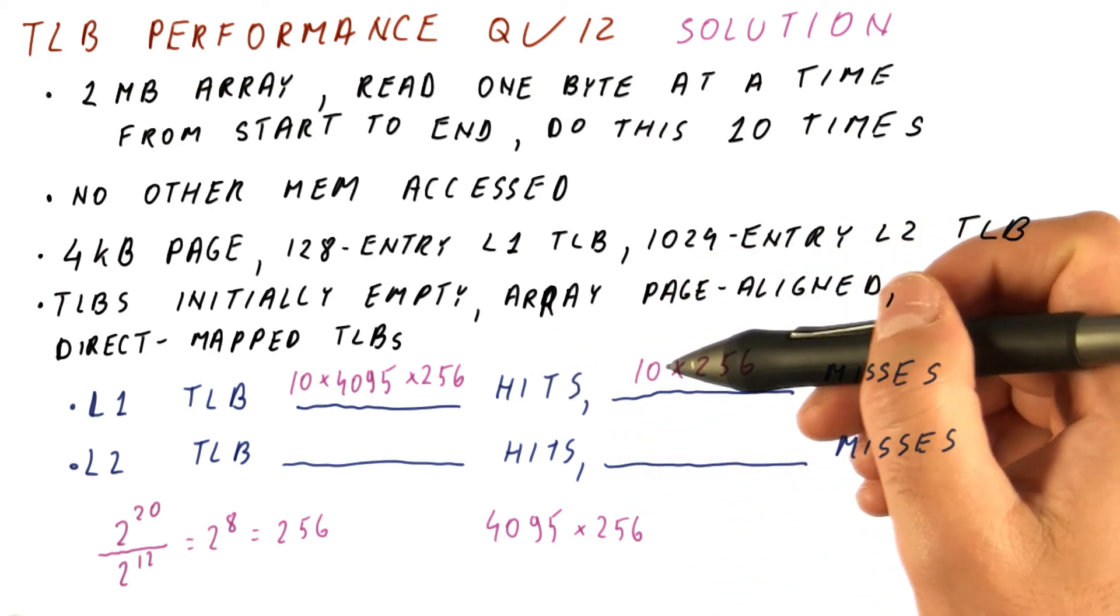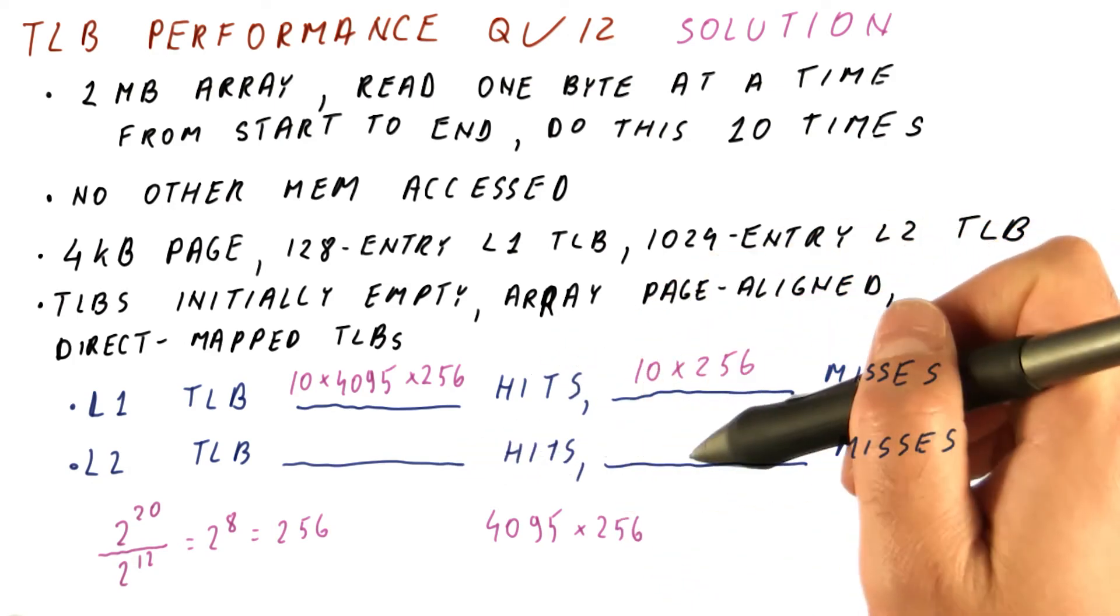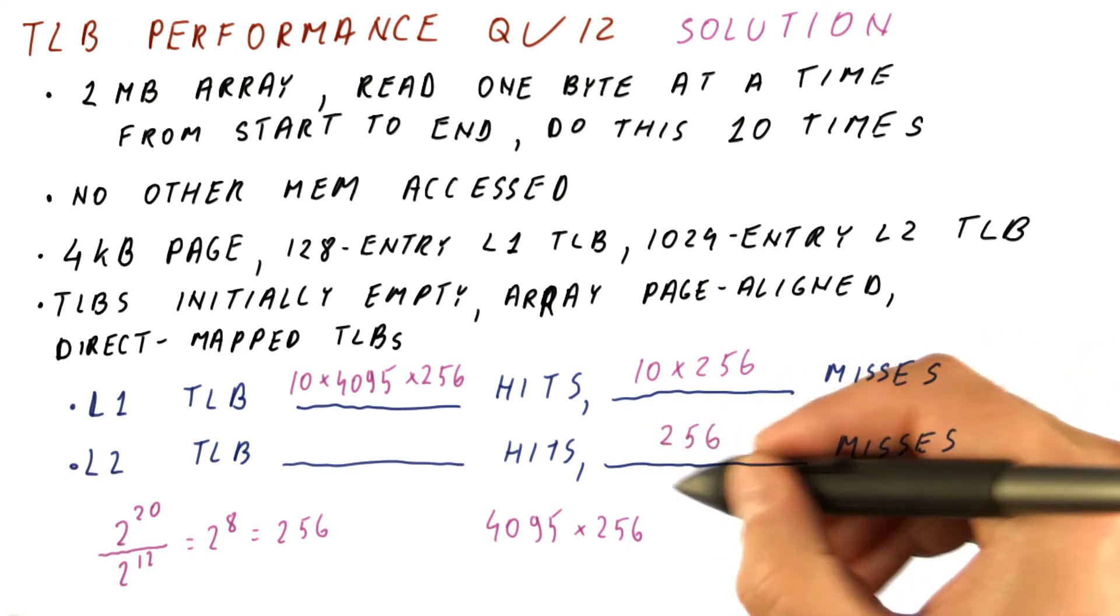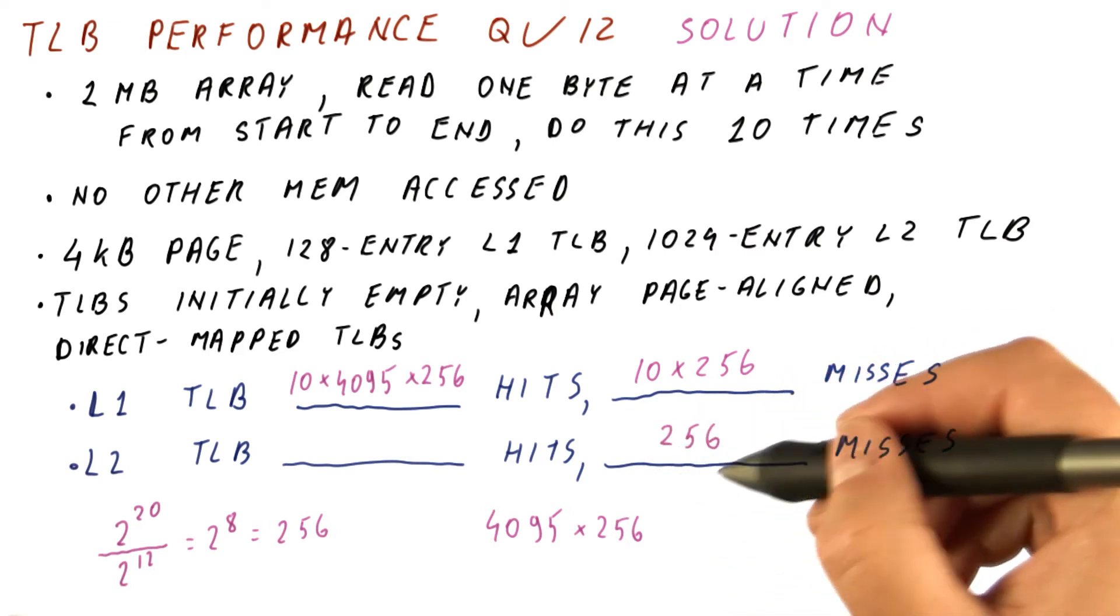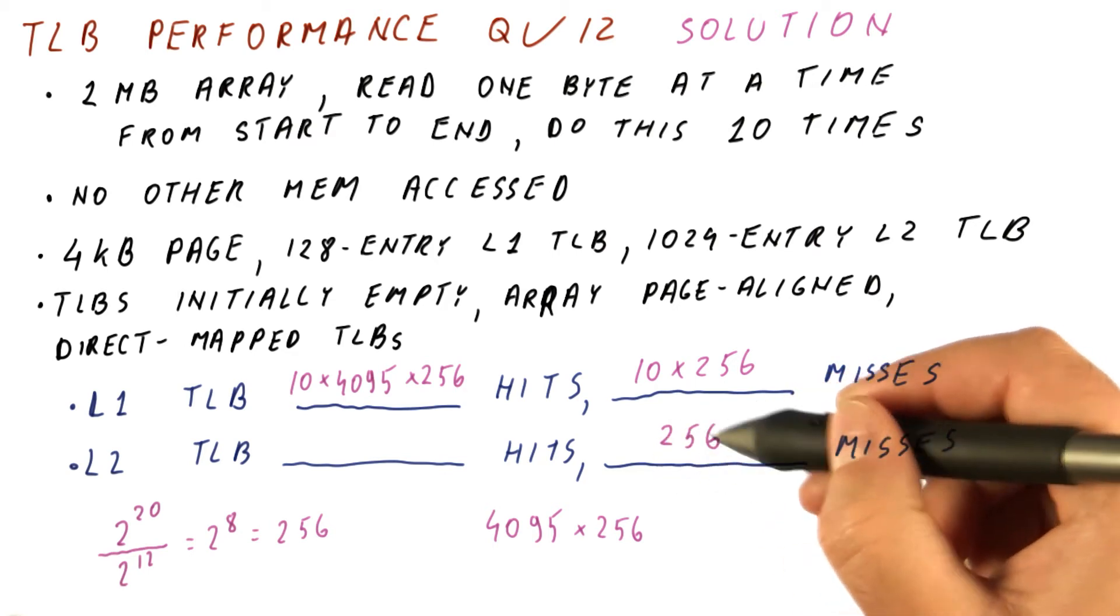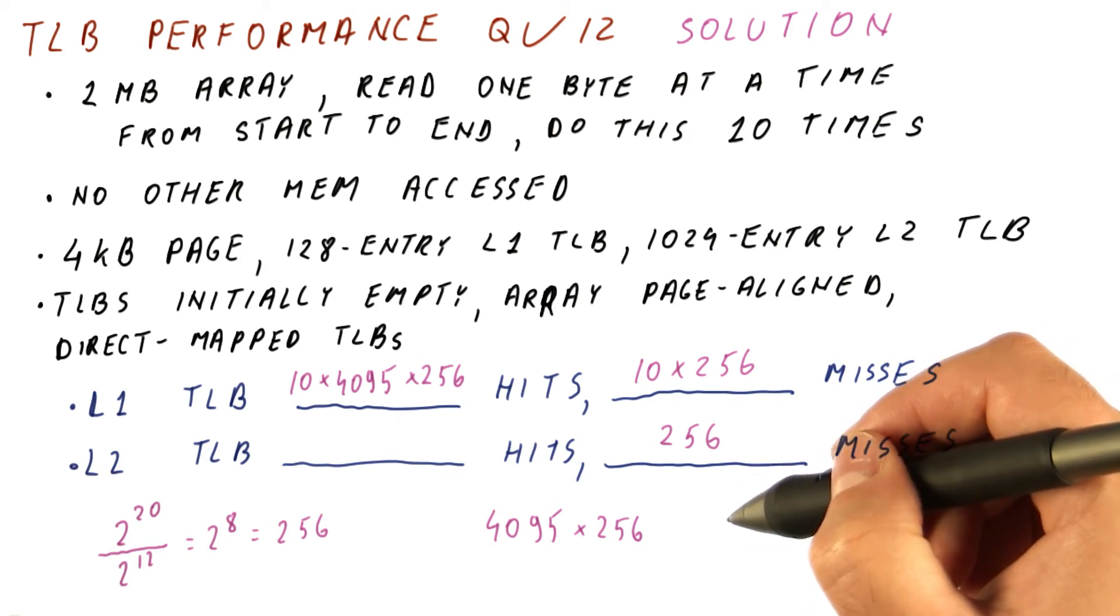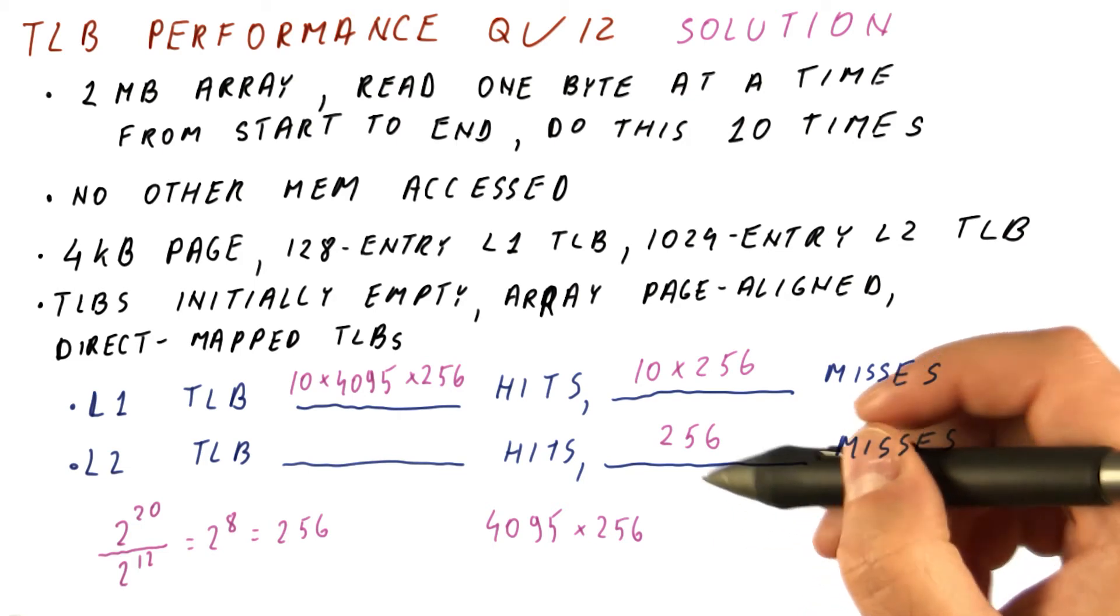Now the question is, for L2, what do we have? We know that we will have 256 misses. That is because during the first sweep, we have no mappings for any of the 256 pages. After the first sweep, we will have the mapping for all the pages. So we will only have hits, but the question is, how many of them?